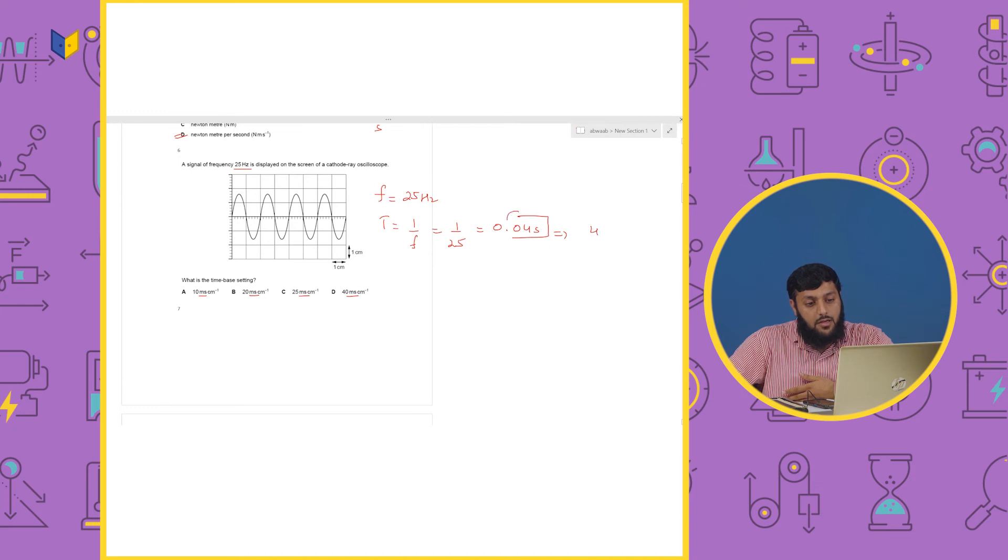So, 4, minus 1, minus 2 and minus 3. So, this would be 40 milliseconds. We have shifted the decimal. Now, this is 40 milliseconds. Time for one wave.